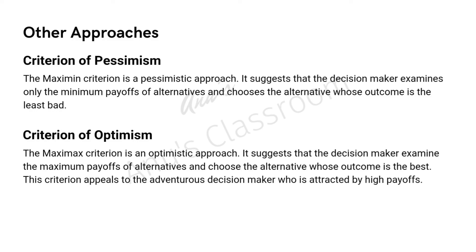Next comes the criterion of optimism, the maximax criterion. It suggests the decision maker will examine the maximum payoffs of alternatives and choose the alternative whose outcome is the best. It appeals to adventurous decision makers who are attracted by high payoffs. In our example of 1 lakh rupees, if you go by the criterion of optimism, you might decide to invest in the stock market yourself rather than mutual funds or ULIPs, and you will definitely not put your money in an FD. You are looking for the maximum benefit — the maximum possible return — but it comes with risk.